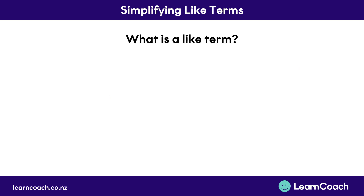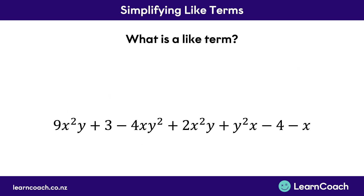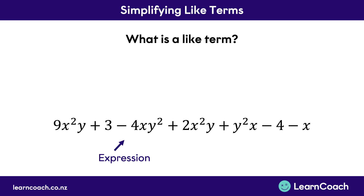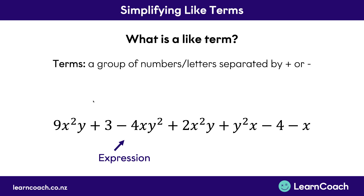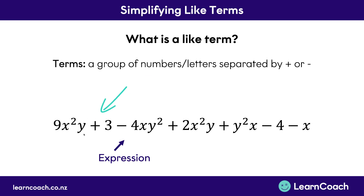So let's look at exactly what a like term is. You're going to see big long strings of letters, numbers and powers — whenever you see one of these it's called an expression. A term is a group of numbers and letters separated by a plus and a minus. So if we see a plus here we draw a line, and this one at the start is a term.